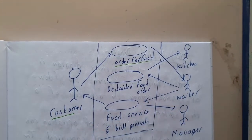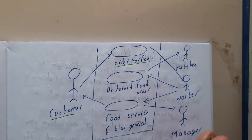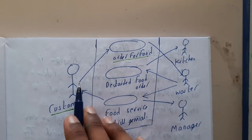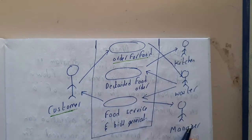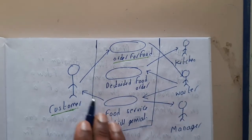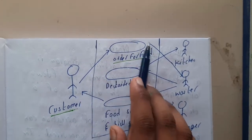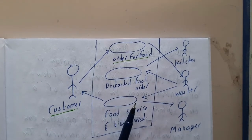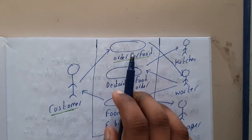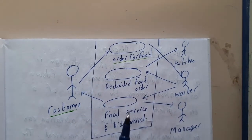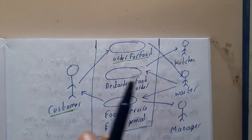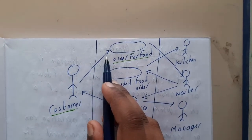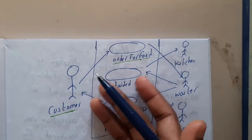In a use case diagram we have actors, and the arrows are called relations, and these circles or ovals are called use cases. Basically, a use case is nothing but a small function, a functionality, or a service.